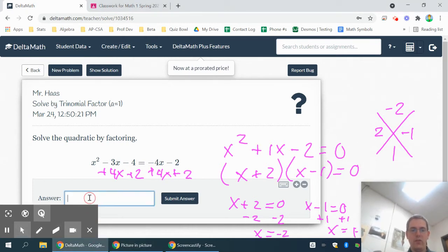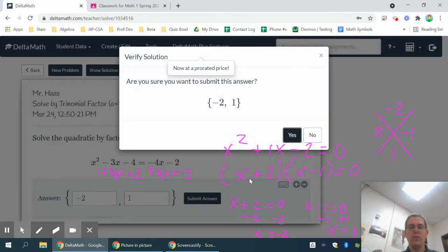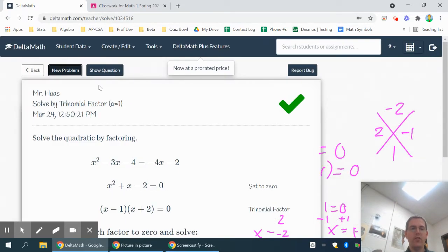Now to type your answer in, you can either type the negative 2 and then a comma 1 or you can use this little plus button to add space for additional answer. But your negative 2 and your 1 will need to be in separate boxes. If you're using a keyboard, the comma is great. If not, the little plus button will give you another box so your answers can go in different boxes. That's how you do one of those.